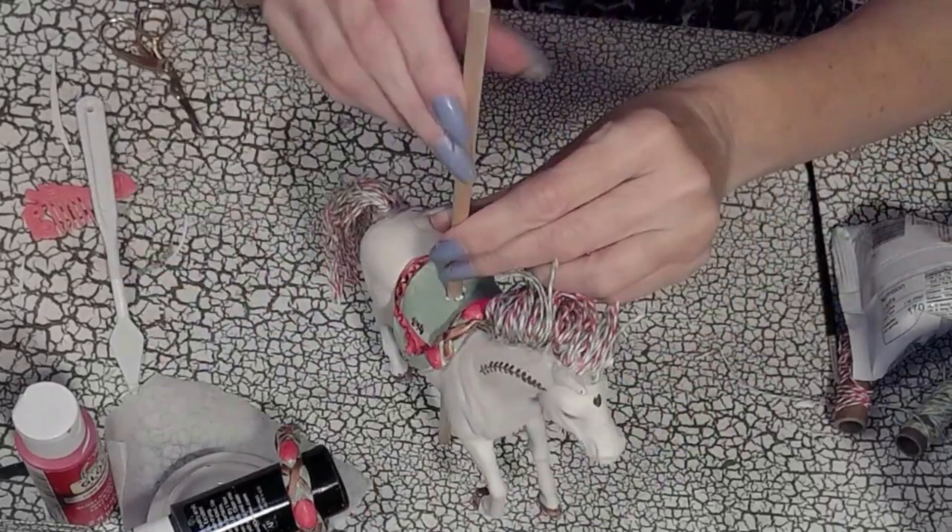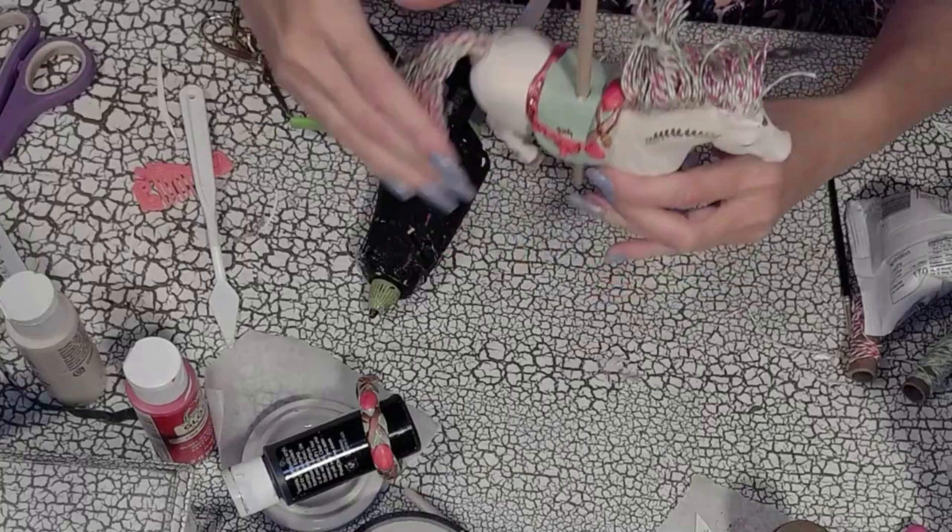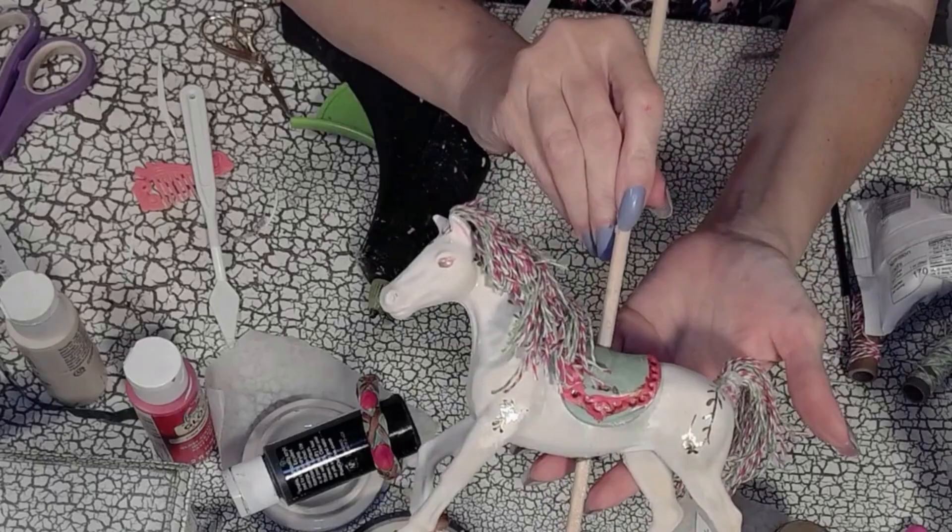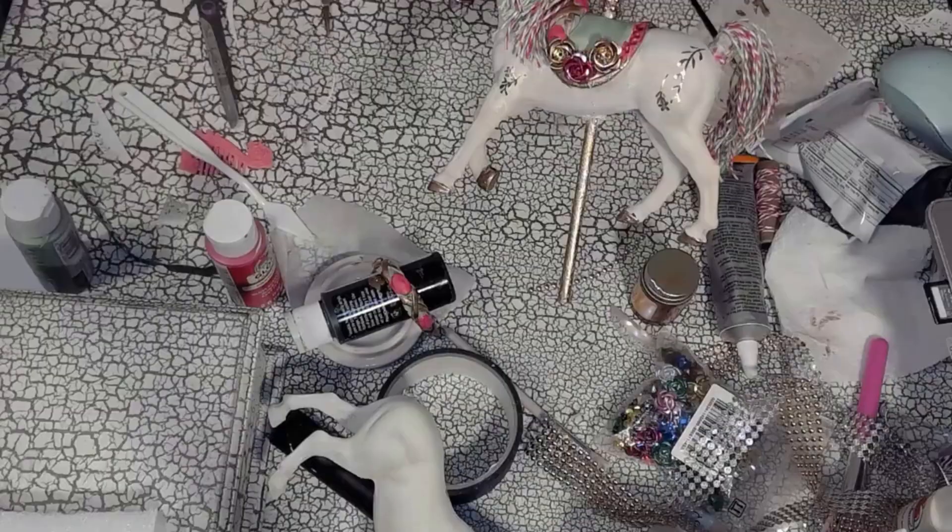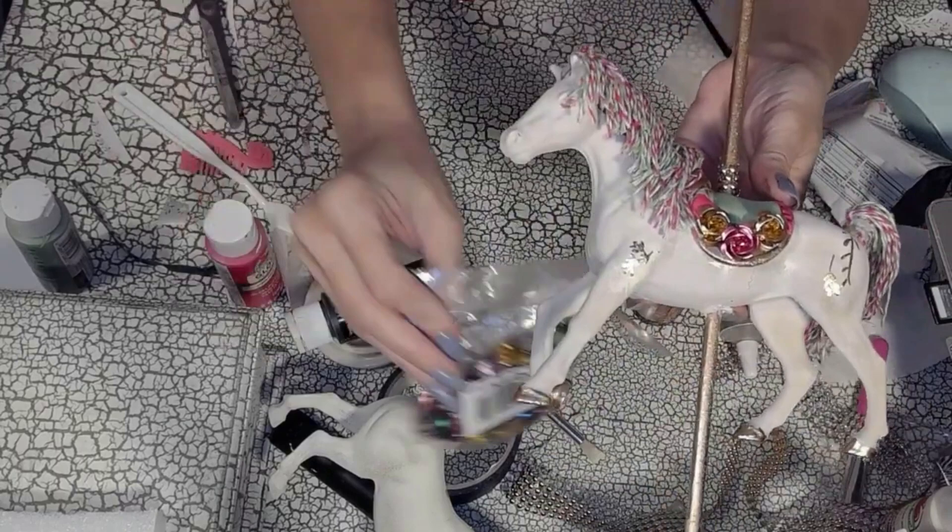And of course I had already made holes for the saddle, so it was very easy to just attach it once my carousel pole was on. Once you have the saddle fitting correctly, all I would do is secure it with hot glue or E6000 or Gorilla Glue and continue adding embellishments. Here I added some beautiful metal roses that I received from BB Craft. And there you can see how lovely the roses look with my carousel horse.